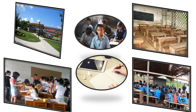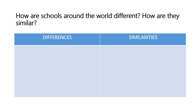All children have the right to go to school and learn. Education is very important if you want to help children who haven't got the same opportunities. Schools around the world may be different or they may be similar, but they are all places designed for learning. Every country has a different approach to education. Stop the video and think about differences and similarities of schools around the world.